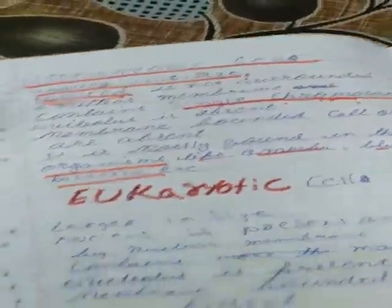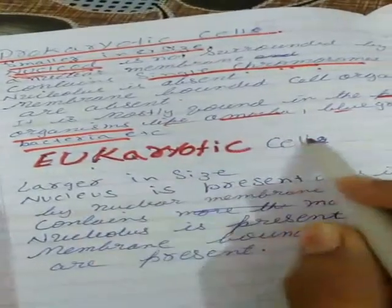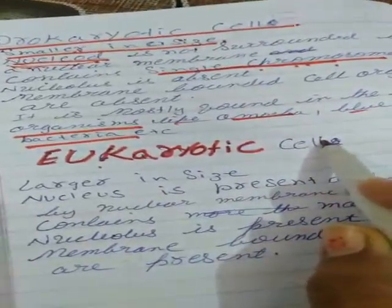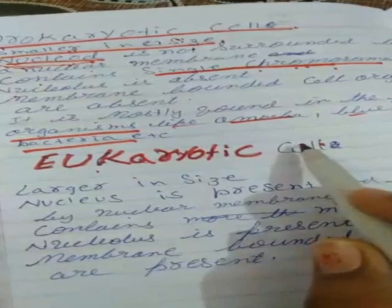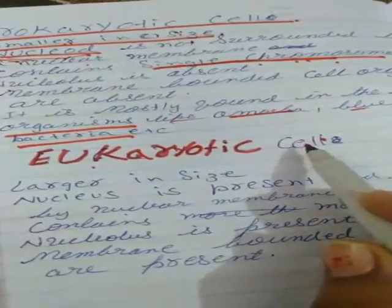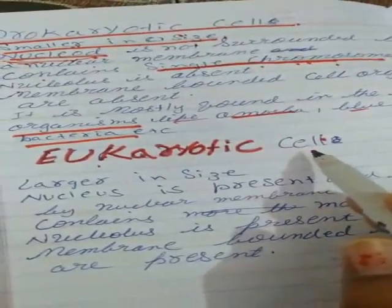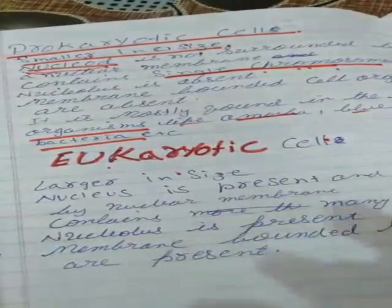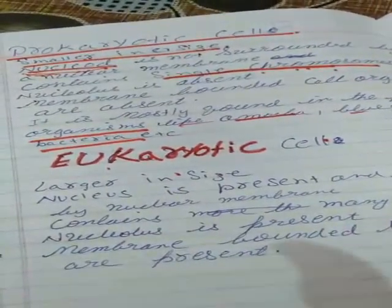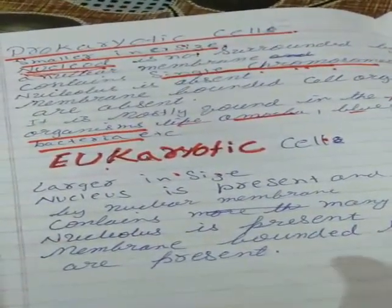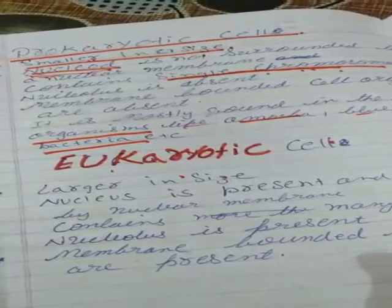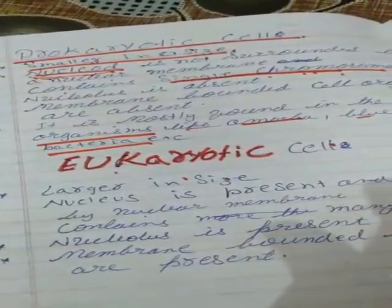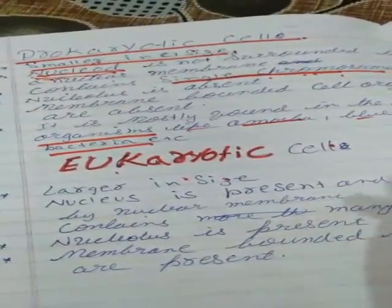Now let us discuss the eukaryotic cell. Eukaryotic cells are the true and advanced cells. They are larger in size because all the organelles are membrane-bounded and have their specific shapes, and the nucleus is also membrane-bounded.